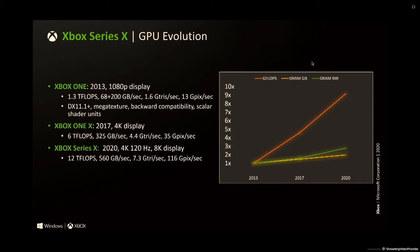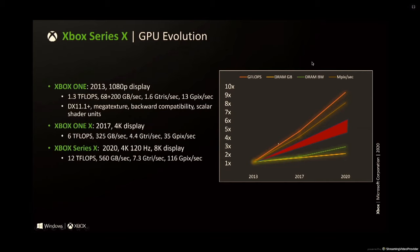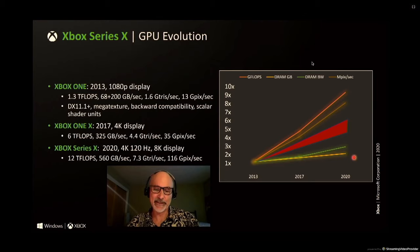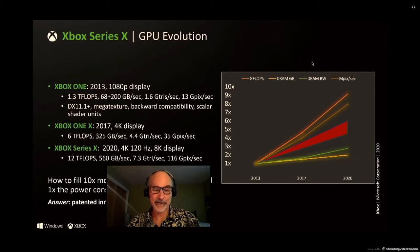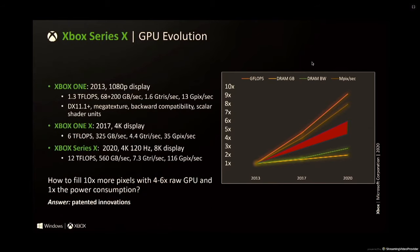Let's look at the evolution of GPU capabilities since Xbox One. The normalized graph shows that process and design advances have allowed raw shader teraflops to increase 9x — enabling some stunning visual techniques. Memory space and bandwidth have grown much more slowly, only 2 to 3x. The number of TV screen pixels that have to be filled has gone up almost as fast as shader power. If you average out GPU compute and memory capability, the usable performance increase is somewhere in the 4 to 6 range depending on the title. But we want much nicer, more realistic pixels — so how do we fill more, better pixels and not blow the power budget? The answer is architectural innovation.